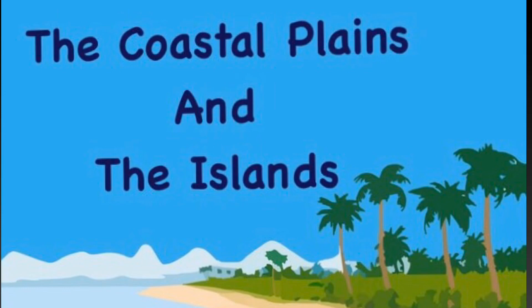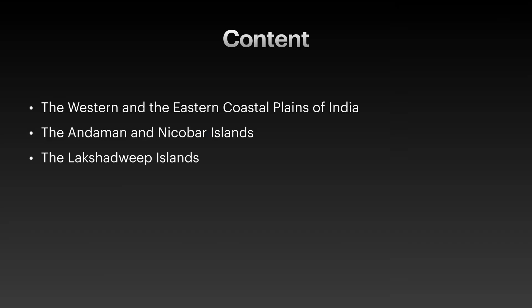In this video, we will study about the coastal plains and the islands of India. A coastal plain is a flat low-laying land adjacent to a seacoast. An island is a landmass surrounded on all sides by water. We will cover in detail the western and the eastern coastal plains of India, the Andaman and Nicobar Islands, the Lakshadweep Islands, and the life in these areas.